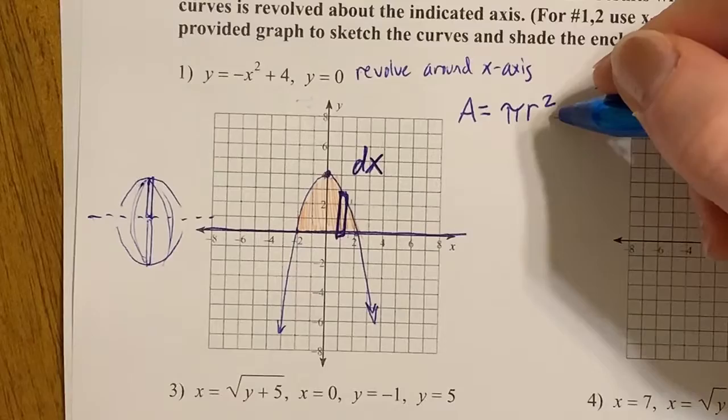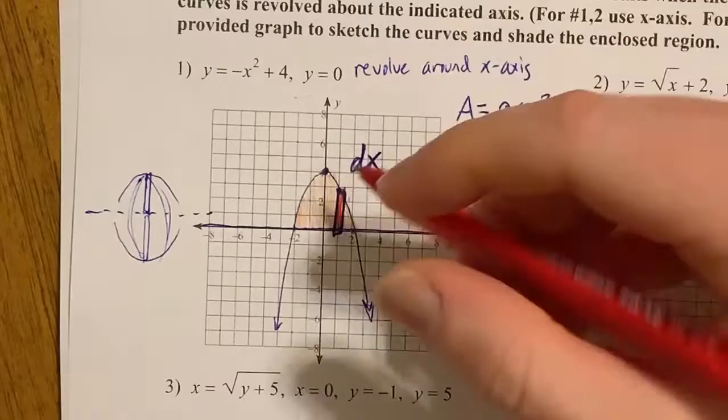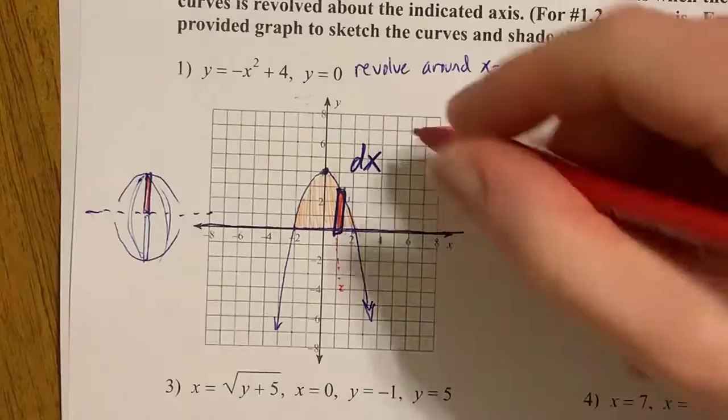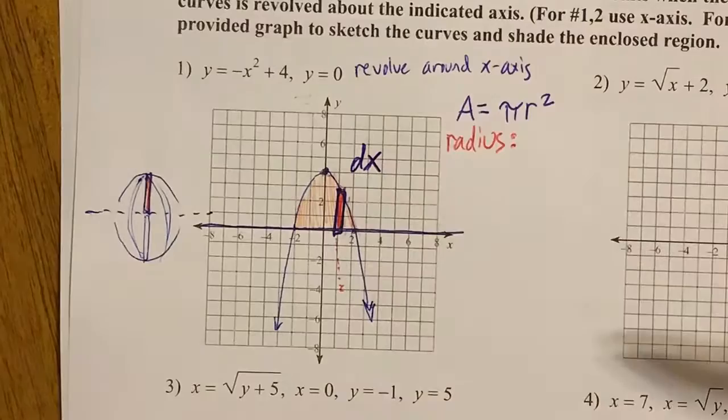So I need to find the radius of one of those slices. Well, if you check out my picture, especially this 3D version, the radius is this bar that I've drawn. That is the radius because the shape would keep going down here. So that is the radius, and to find the length of it, the radius goes between the function and the x-axis.